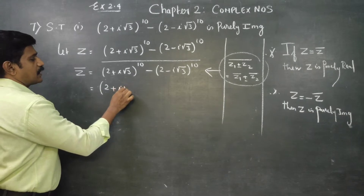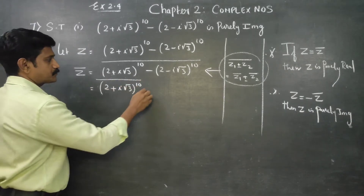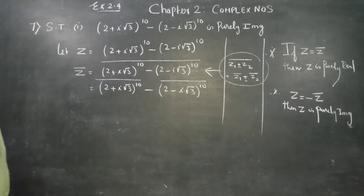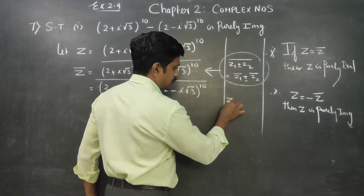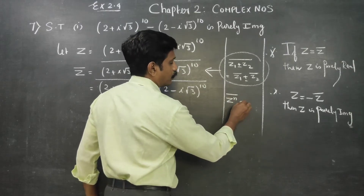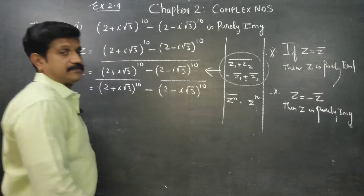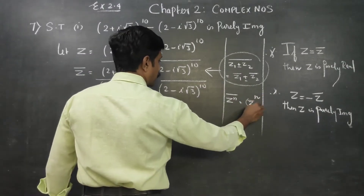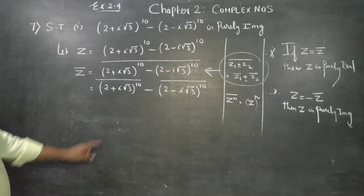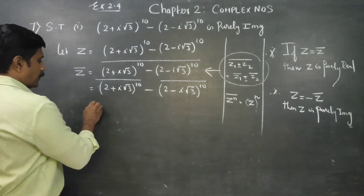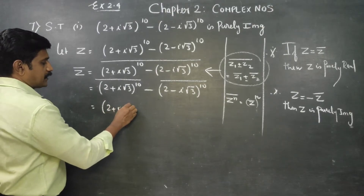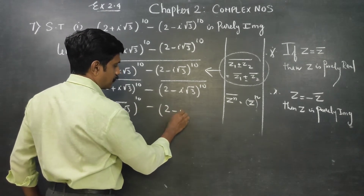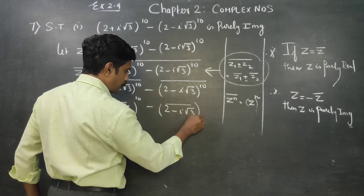Applying the rule: (2 + i√3)^10 conjugate gives us (2 - i√3)^10, and minus (2 - i√3)^10 conjugate gives minus (2 + i√3)^10. Using the power rule: the conjugate of Z^n equals (Z-conjugate)^n.